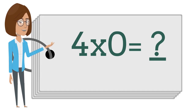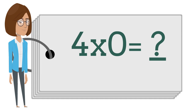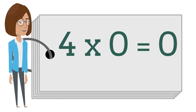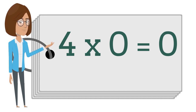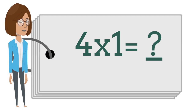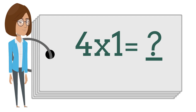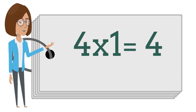4 times 0 is? Can you tell me? Say your answer out loud. 4 times 0 is 0. 4 times 0 is 0. 4 times 1 is? Can you tell me? Say your answer out loud. 4 times 1 is 4. 4 times 1 is 4.